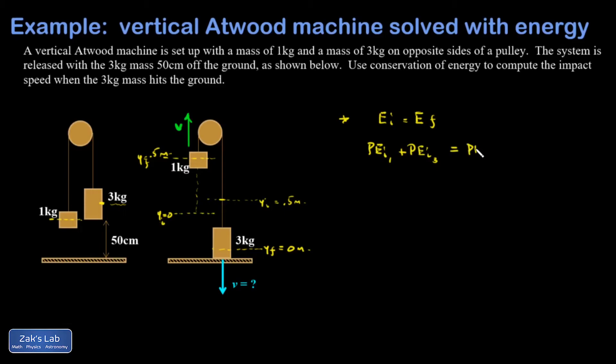In the final state, I have the potential energy final for the one kilogram mass, potential energy final for the three kilogram mass, plus everything is moving. So I have one half M, I'll just call it M1 to indicate the one kilogram mass, V final squared, plus one half M3. That's the three kilogram mass, V final squared.